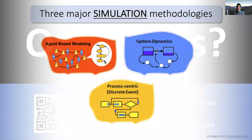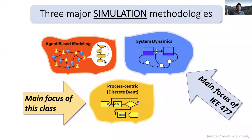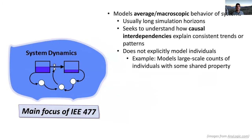Let's move on and focus on simulation and stochastic simulation. There are three major simulation methodologies: agent-based modeling, system dynamics modeling — which is the focus of IE 477 — and discrete event system simulation modeling, which is what we focus on in this class. Let's make sure we understand the others for contrast.